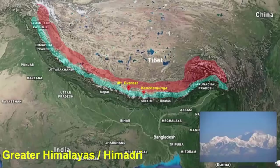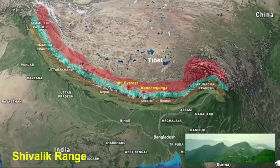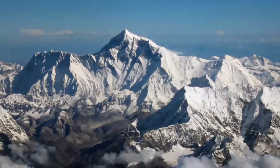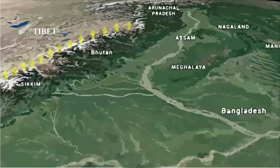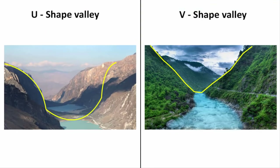In India, you will find many V-shaped valleys in the northern states and northeastern states. In these places, most of the V-shaped valleys are found in the lower and middle ranges of the Himalayas, because the upper Himalayas or the greater Himalayan ranges have ice and glaciers, and with glaciers you will find U-shaped valleys.